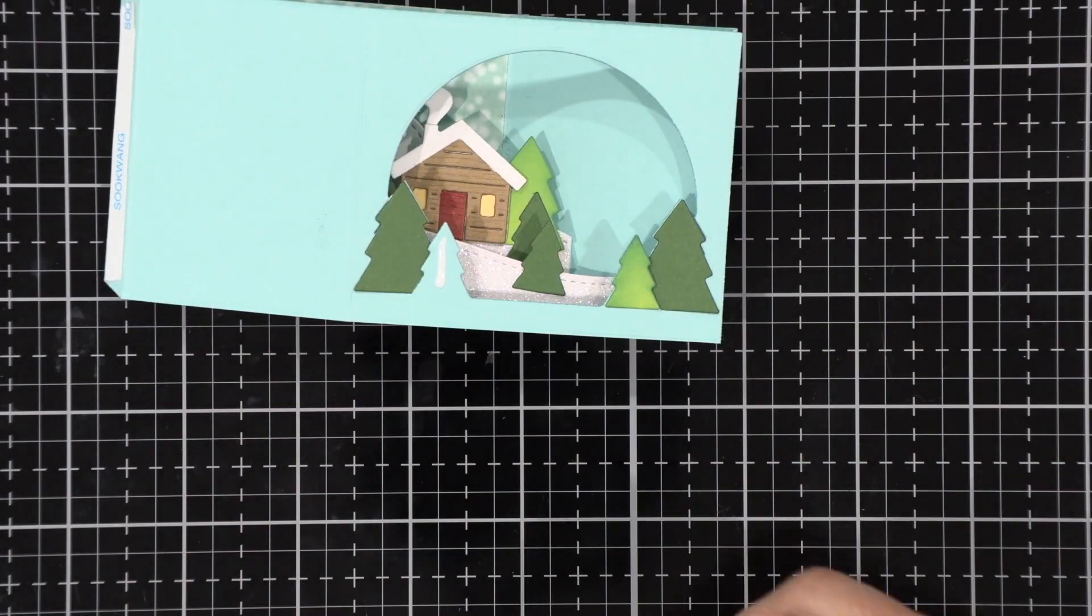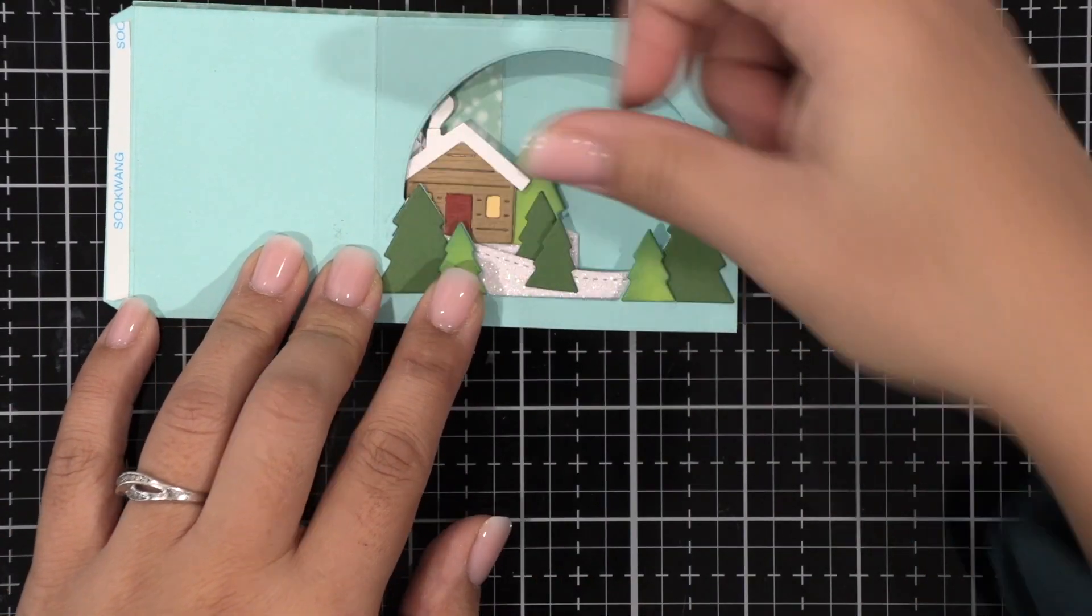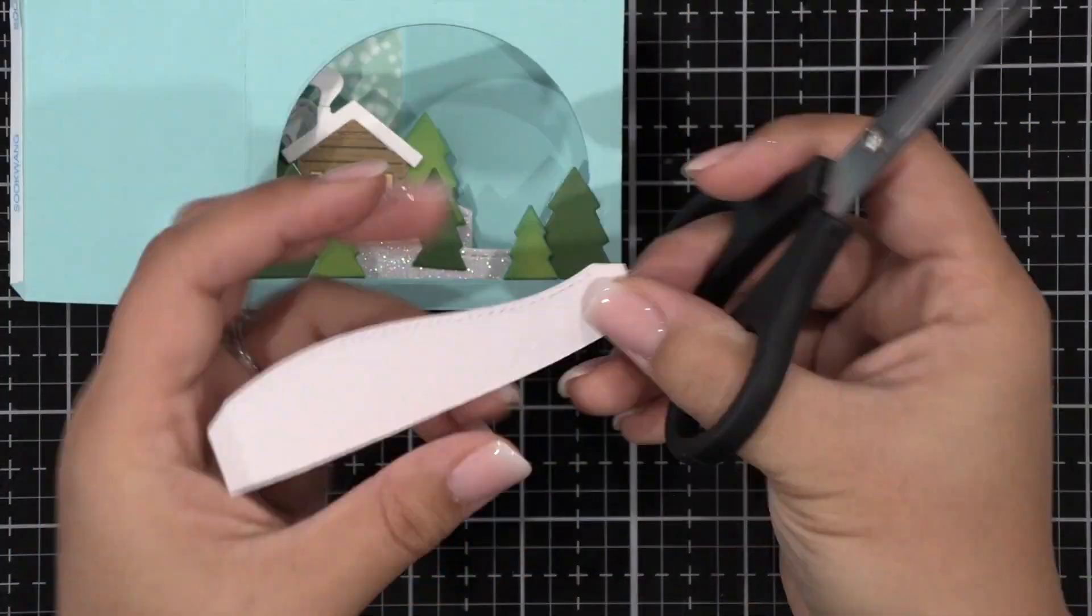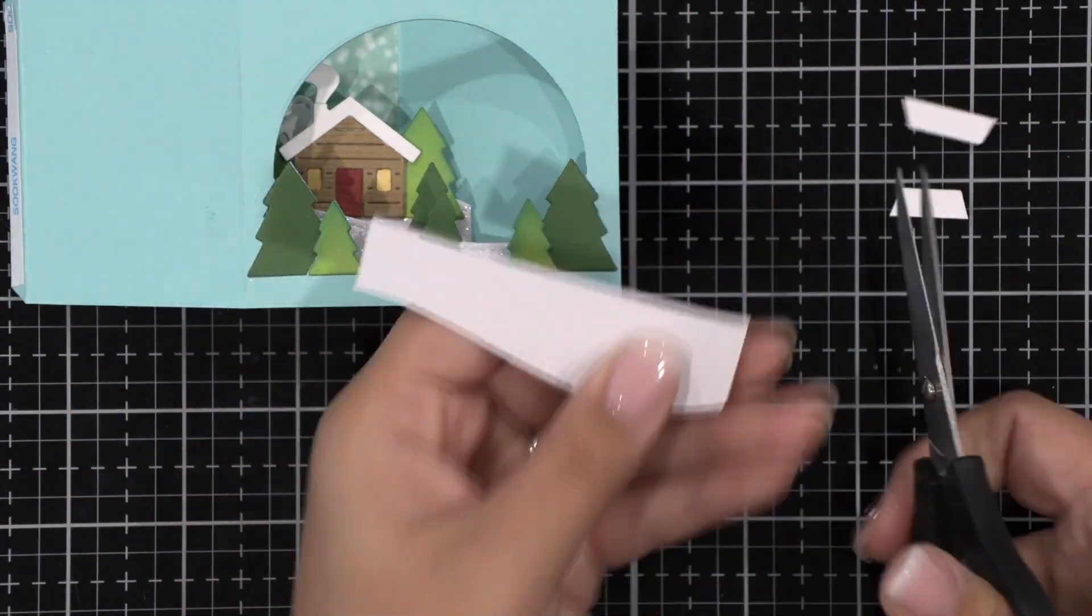Now in order to add my skating mice I'm going to need a pond. I'm going to create this look by using another hillside then matting it with a layer of pearlescent vellum.